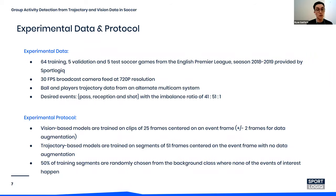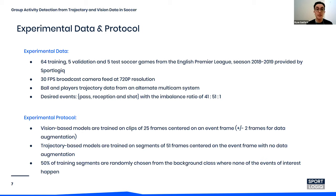For our data, we had 74 soccer games from the English Premier League from the 2018–2019 season, provided by SportLogic. We split the games into 64 training, 5 validation, and 5 test. The events we were interested in detecting were pass, reception, and shot. The vision-based model was trained on clips of 25 frames centered on the event frame, with jittering of plus or minus 2 frames as data augmentation. The trajectory-based models were trained on segments of 51 frames centered on the event frame with no data augmentation. We also randomly sampled frames that were not pass, shot, nor reception, and used these segments as background.